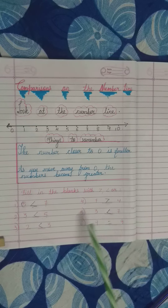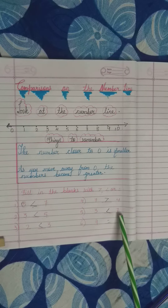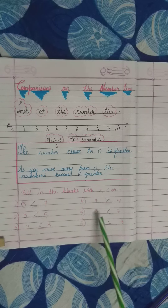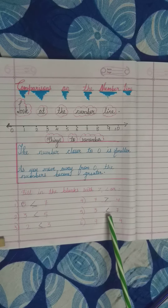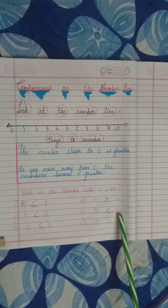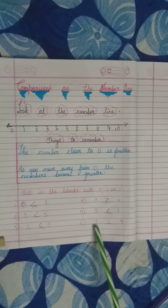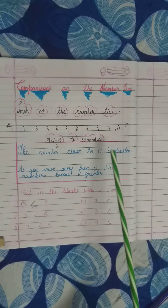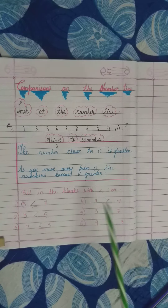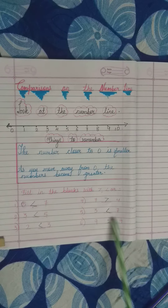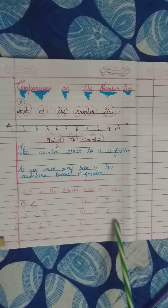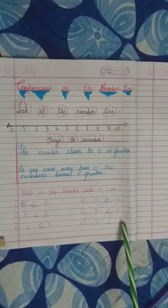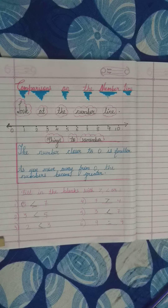From 3 and 7? Of course 7 is greater, so 3 is smaller than 7. From 9 and 9, we will put the equal to mark because both the numbers are the same. Thank you.